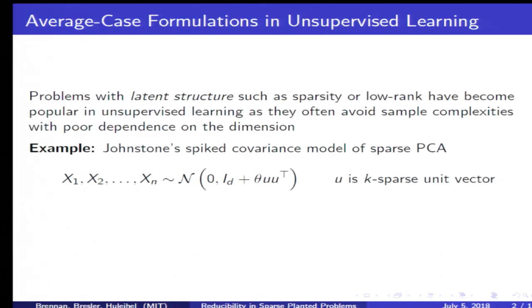Just as an example, consider Johnstone's model of the spike covariance model of sparse PCA, in which we observe n examples from a sparsely spiked d-dimensional Gaussian. In this case, the minimal SNR necessary to detect such a spike only depends logarithmically on the dimension, and this is because of the sparsity assumption.